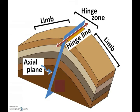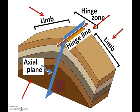There are just a few pieces and parts of a fold that are important to recognize. The hinge line is a line drawn down the points of maximum curvature of each layer, and it is located in the center of the fold. The axial plane is an imaginary surface that divides the fold symmetrically into two limbs, which refer to the two sides of the fold.